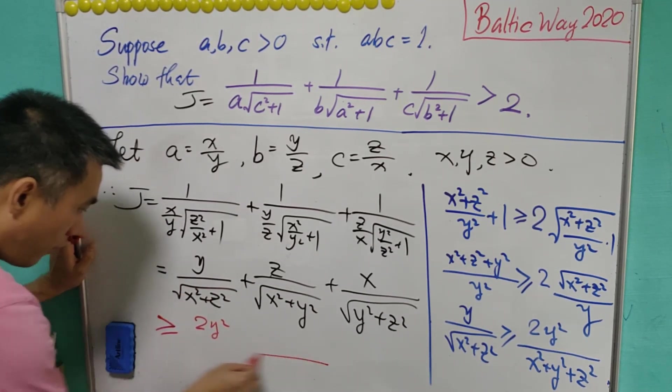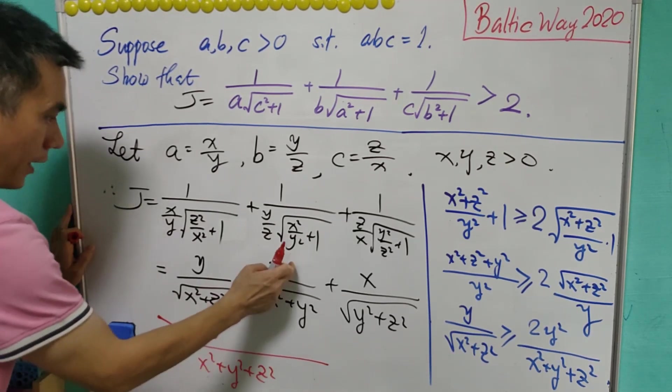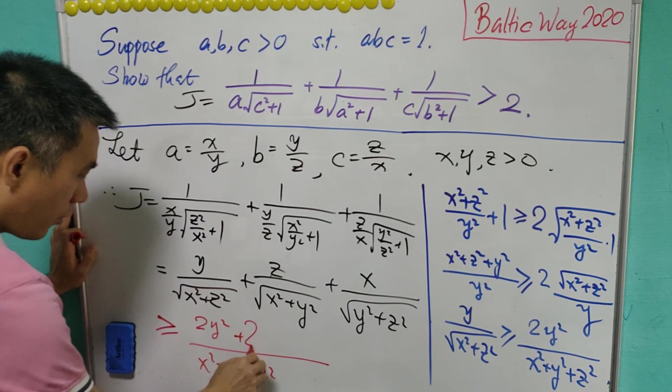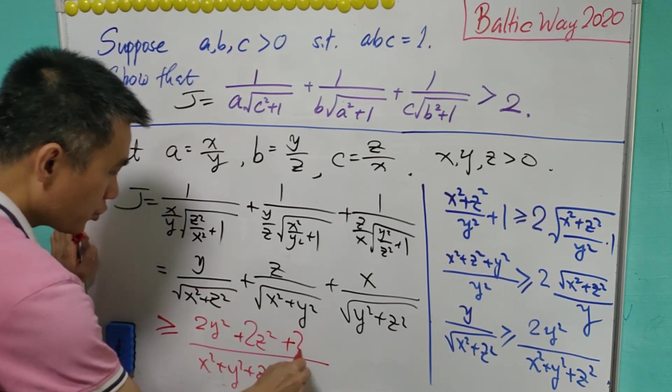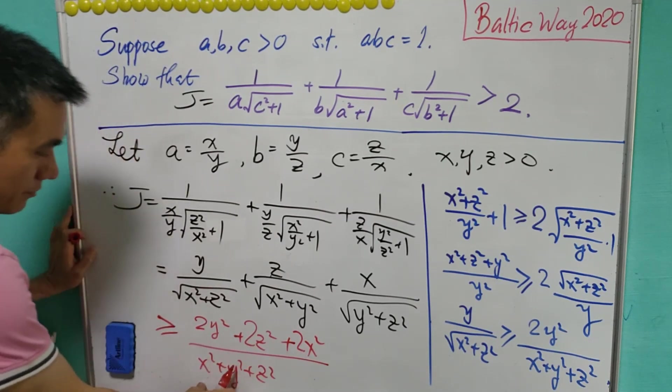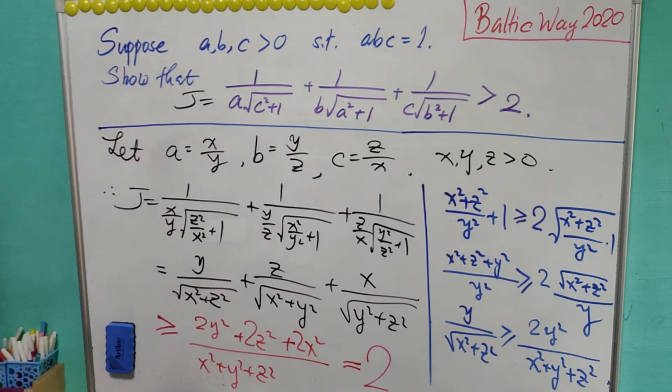This will be greater than or equals to 2 times y squared over (x squared plus y squared plus z squared), and similarly this will be 2 times z squared over the same denominator, plus 2 times x squared over the same denominator.